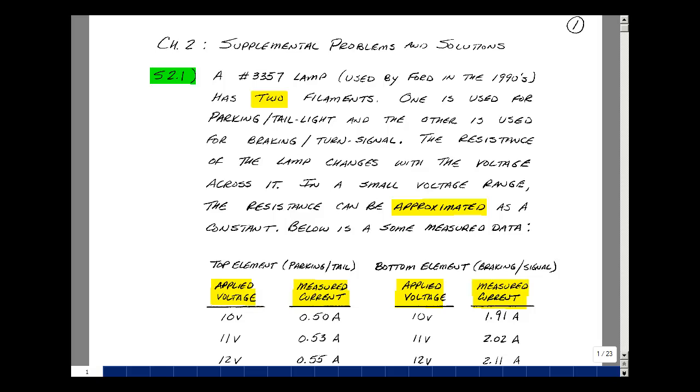Let's consider modeling an incandescent bulb, in particular a number 3357 lamp. These were used in Fords in the 1990s. It has two filaments: one for parking and tail light, the other for braking and turn signal. The resistance of this lamp changes with the voltage across it, as we'll see from the data below. But in a small voltage range, we could approximate this as a constant resistance.